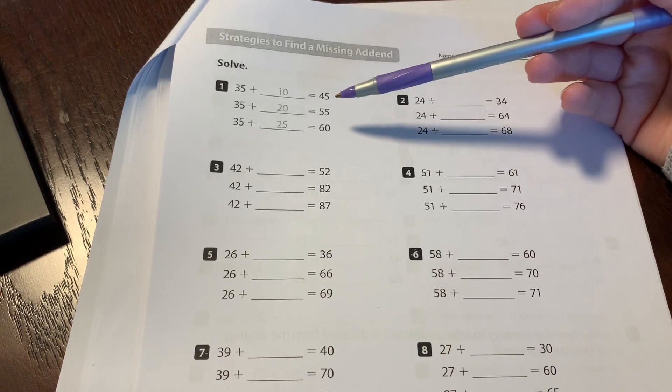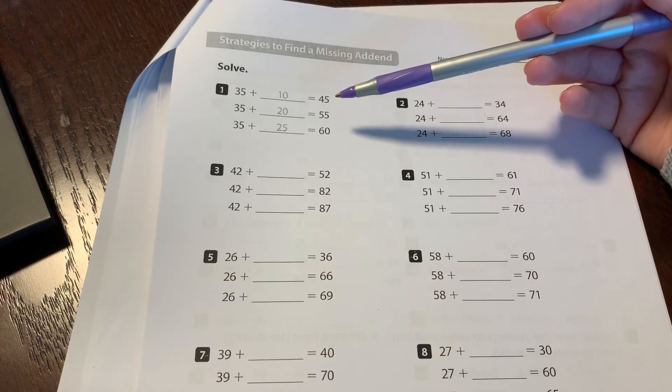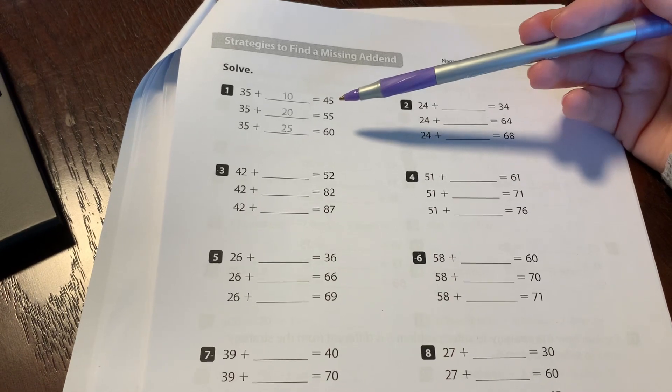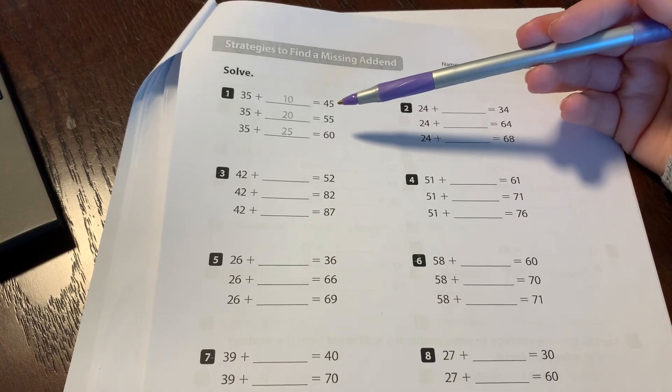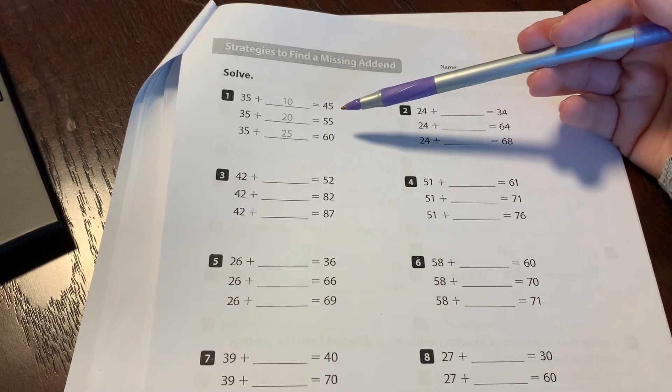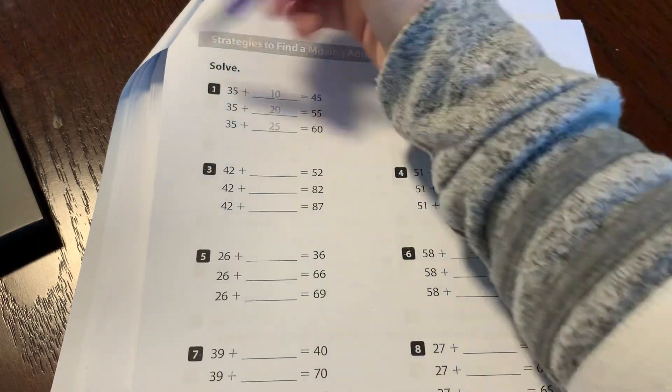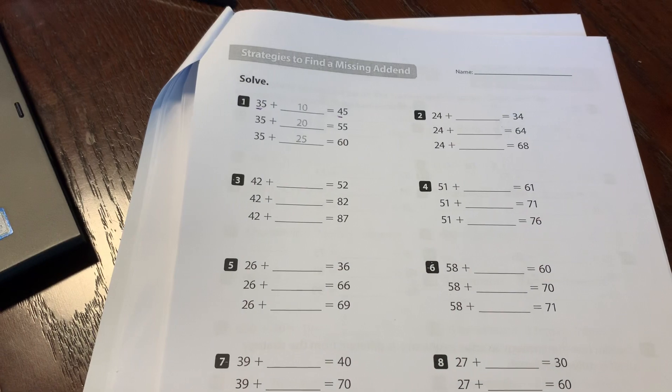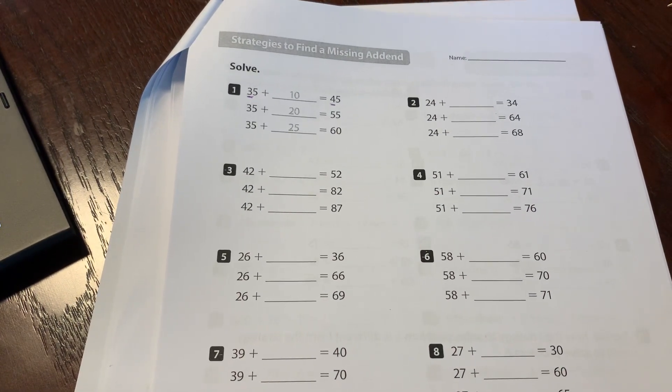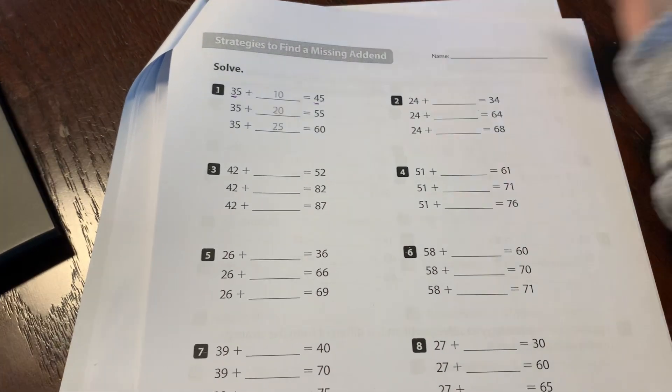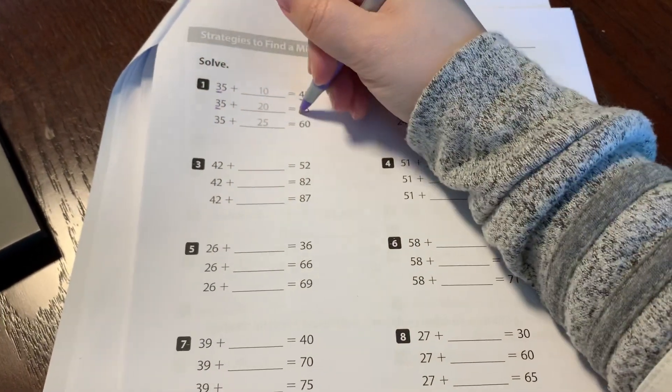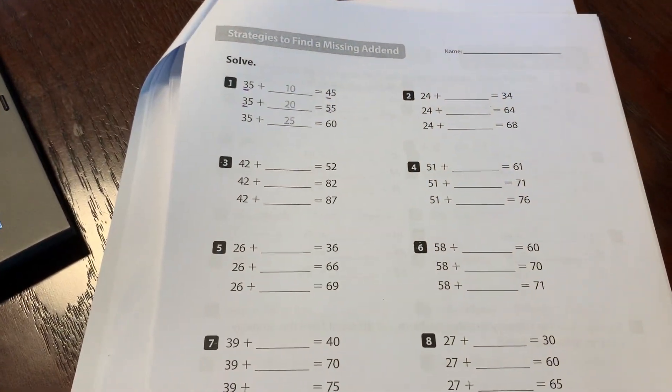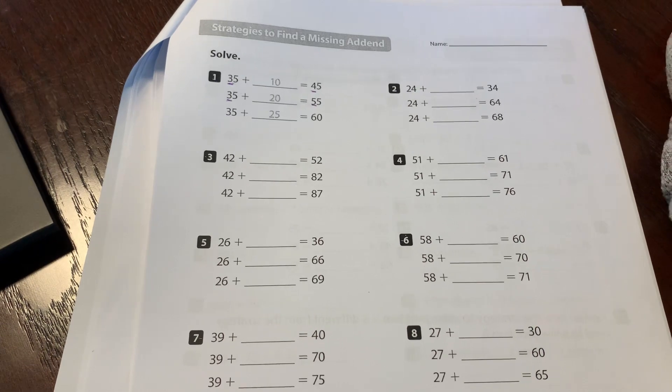So for example, in the first problem, 35 plus a number equals 45. Well, we know by counting by tens that 35 plus 10 is 45. Notice here that the tens place is what changed by one. Next, 35 plus a number is 55. Notice the tens place is changing by two. So I know I had to add 20.